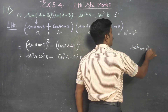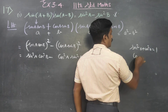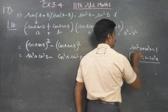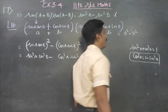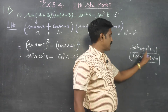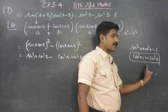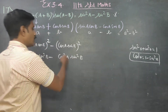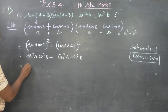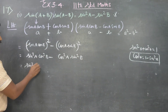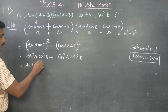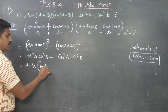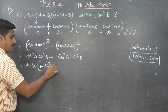Now, cos²θ = 1 − sin²θ. This is a formula from 10th standard: sin²θ + cos²θ = 1, therefore cos²θ = 1 − sin²θ. So cos²A = 1 − sin²A and cos²B = 1 − sin²B.